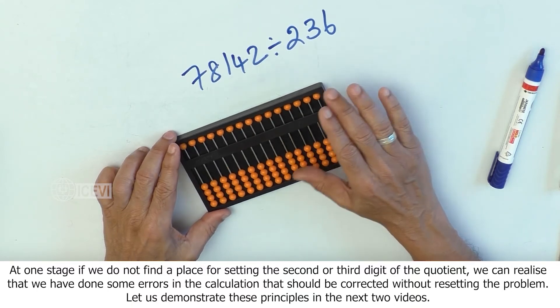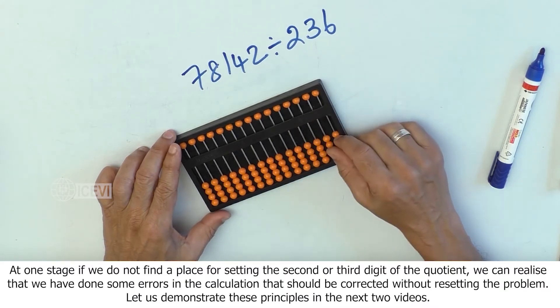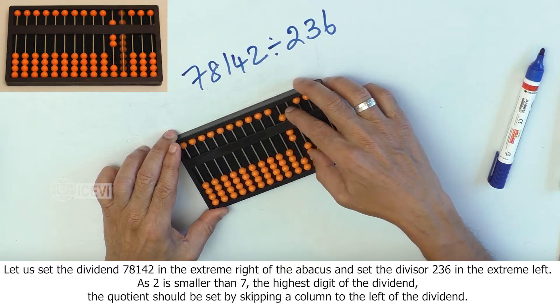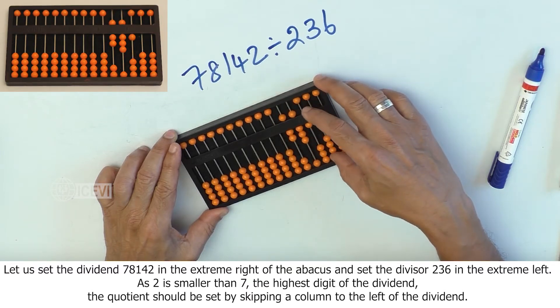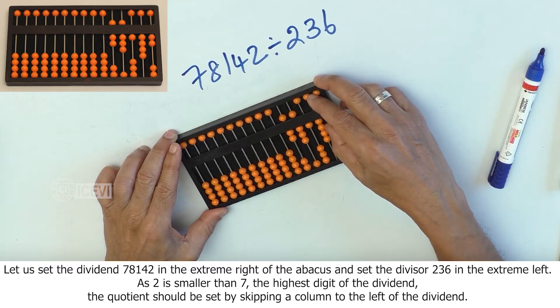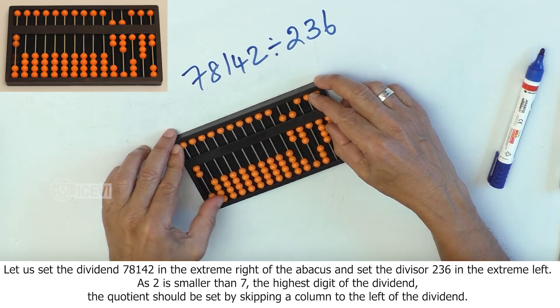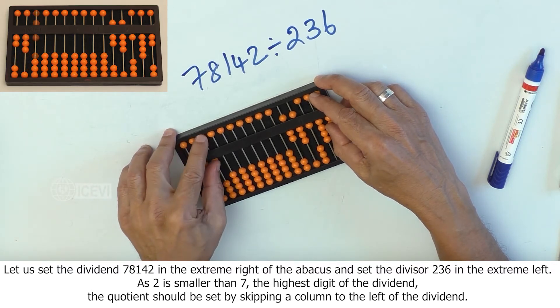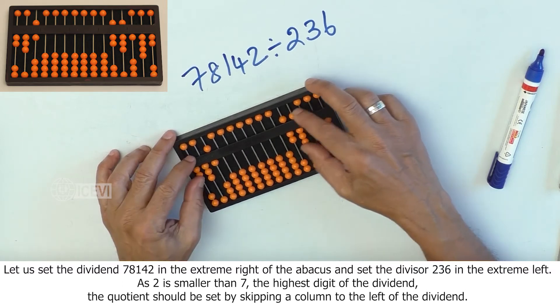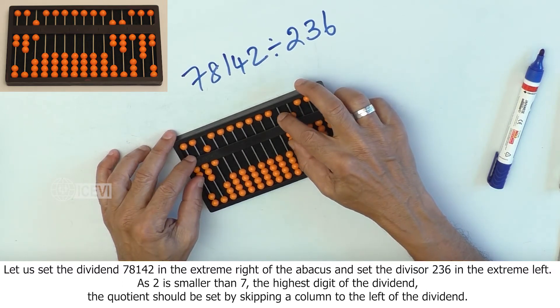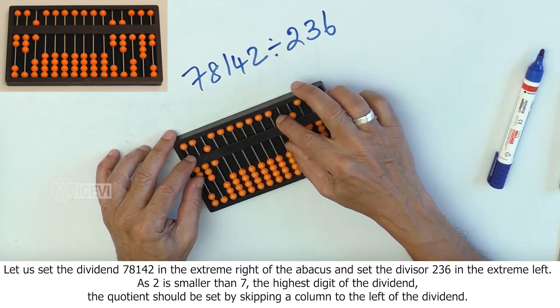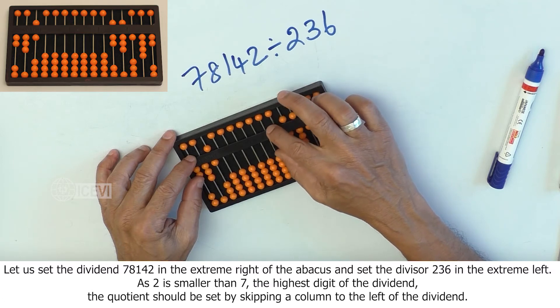Let us demonstrate these principles in the next two videos. Let us set the dividend 78,142 in the right extreme of the abacus and the divisor 236 in the extreme left of the abacus. As 2 is smaller than 7, the highest digit of the dividend, the quotient should be set by skipping a column to the left of the dividend.